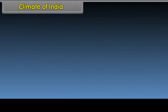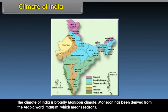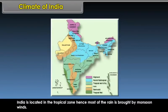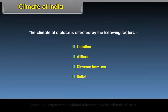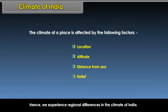The climate of India is broadly monsoon climate. Monsoon has been derived from the Arabic word 'mossim' which means seasons. India is located in the tropical zone, hence most of the rain is brought by monsoon winds. The climate of a place is affected by the following factors: location, altitude, distance from sea, and relief. Hence, we experience regional differences in the climate of India.